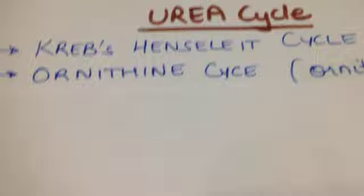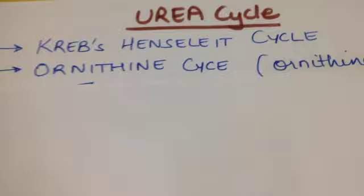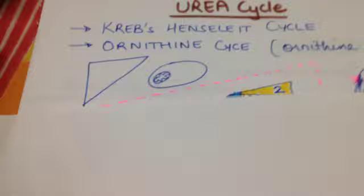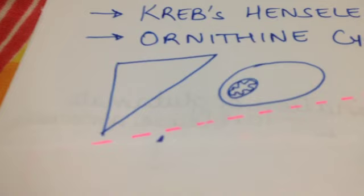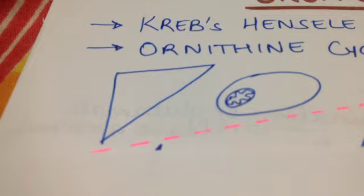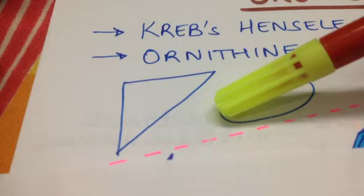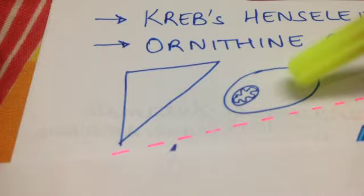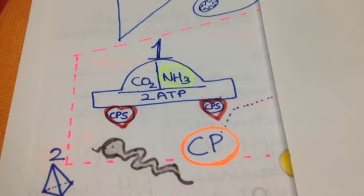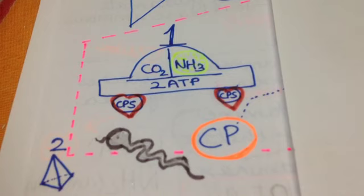Before we come to the steps, note that the urea cycle takes place in the liver. The first two reactions take place in the mitochondria and the rest take place in the cytoplasm.